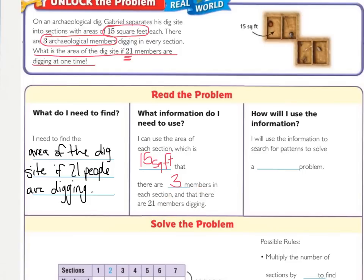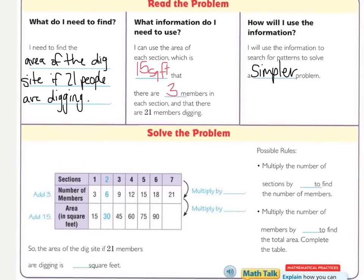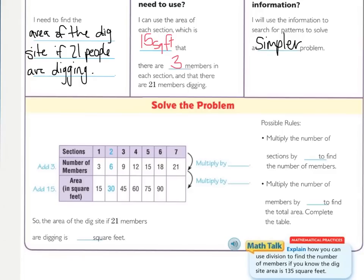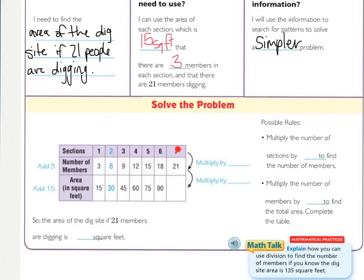How are we going to use this information? This is our plan. I will use the information to search for patterns to solve a simpler problem — that's the strategy from our essential question, and that's the strategy we're going to practice today. Now let's look at the actual solve. They've created a table with the number of sections, the number of members — the rule is add three, because it's three for every section.